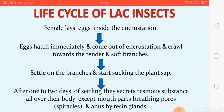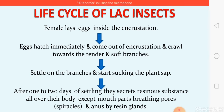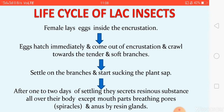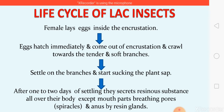They settle on the branches and after one to two days of settling, they start secreting the resinous substance all over the body, except at the three regions: mouthparts, breathing pores, and the anal region — where the resin glands are absent.